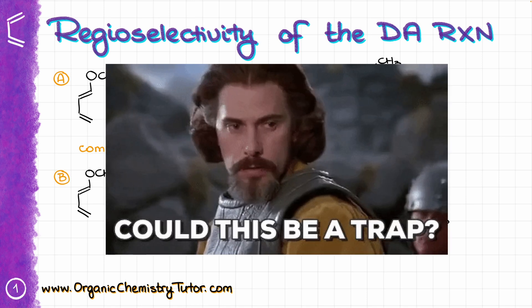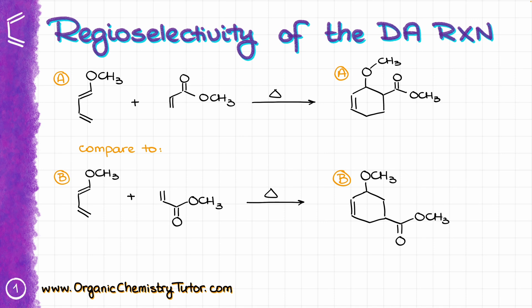This is where two common traps are waiting for you. Trap number one is that many students forget that molecules don't care how we draw them, and thus they fall into a trap of drawing products based on how the starting materials are presented to them. I'm willing to bet that if I drew combination A on a test, the majority of students would give me product A, and likewise if I drew combination B, the majority would give me product B — while the reality is the molecules don't care how I draw them. The only difference here is that the dienophile is flipped upside down in combination B.